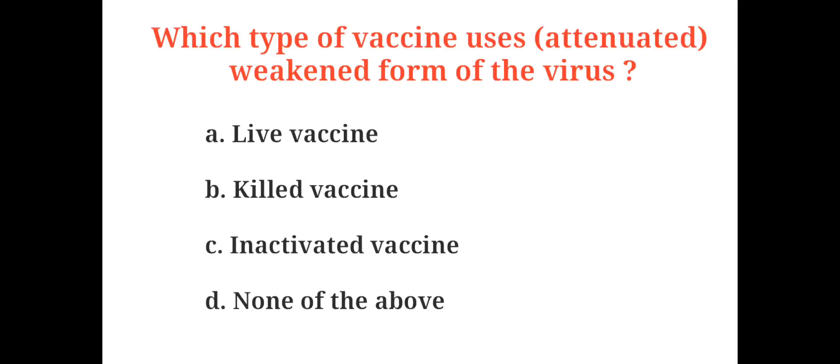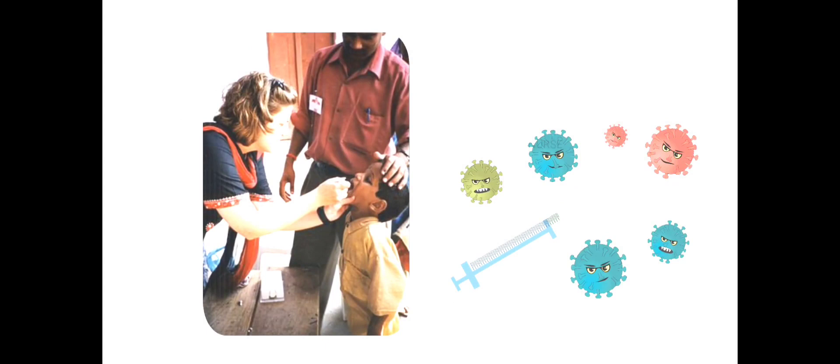Which type of vaccine uses a weakened form of the virus? A. Live vaccine, B. Killed vaccine, C. Inactivated vaccine, D. None of the above. And the correct answer is A. Live vaccine. Live attenuated vaccines are created by weakening infectious organisms that can still replicate and induce protective immune responses without causing disease in the host. Vaccination with the live but attenuated organism generates an immune response that protects the vaccinated person against severe disease or even infection.